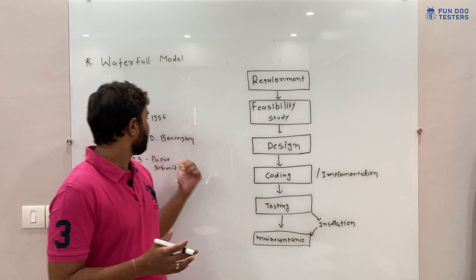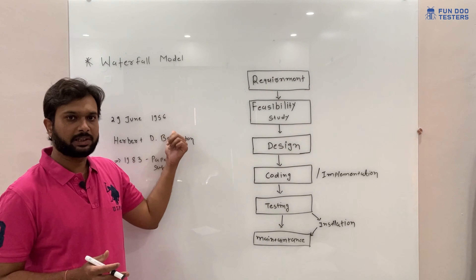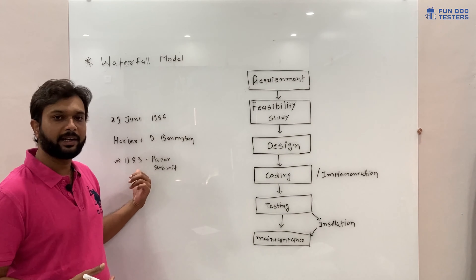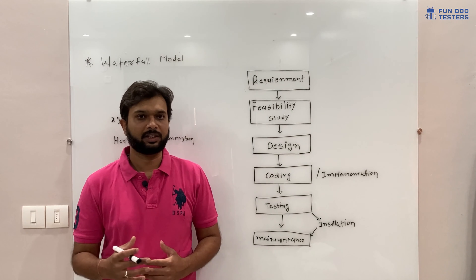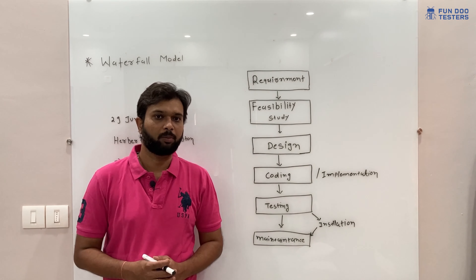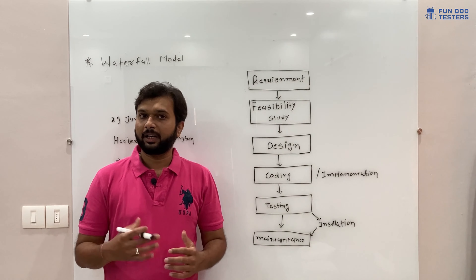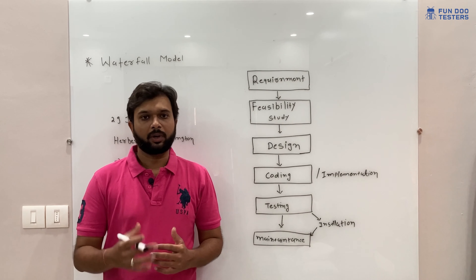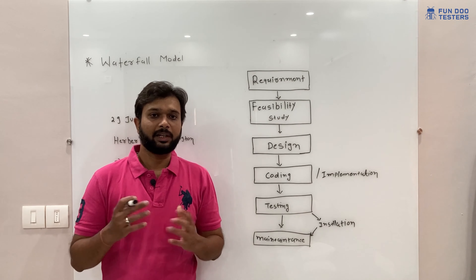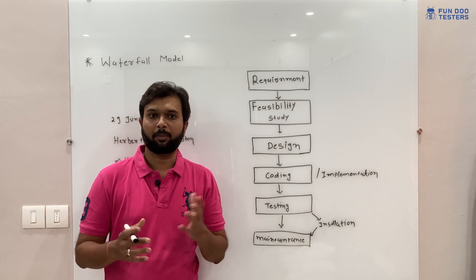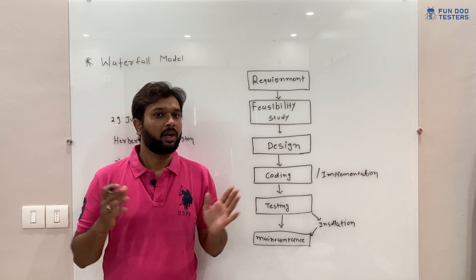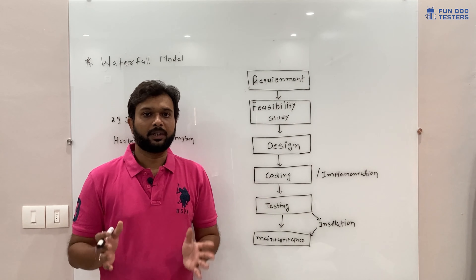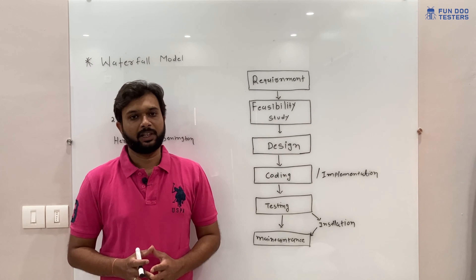Later on, after 1956, he officially submitted a paper in 1983. After that, the industry started using and adapting the waterfall model, and later they found a few disadvantages or drawbacks. To overcome these, different models came along like the prototype model and spiral model. But the waterfall model is the mother of all software engineering models.